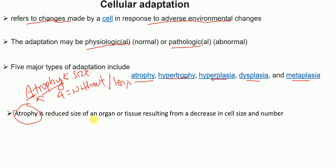Atrophy is the reduced size of an organ or tissue. The organ size is reduced because of a decrease in cell size and a decrease in cell number. That is called atrophy.